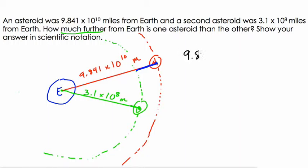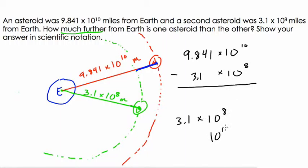So we have 9.841 times 10 to the tenth miles minus 3.1 times 10 to the eighth miles. I'm going to leave the miles out of it here. But I can't subtract right away because the problem is I have different powers of 10. These are different place values. So I'm going to mess around with this number right here so I can subtract it. 3.1 times 10 to the eighth. I want it to be in terms of 10 to the tenth so I can subtract.